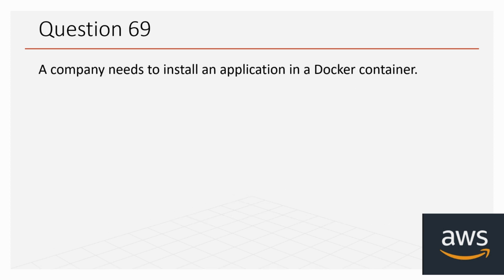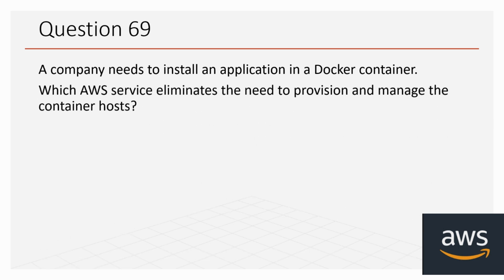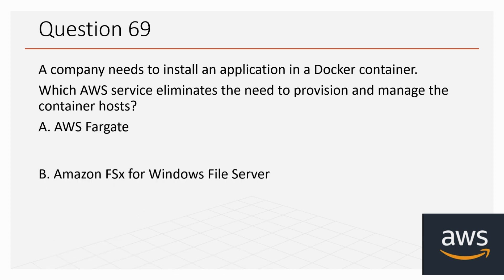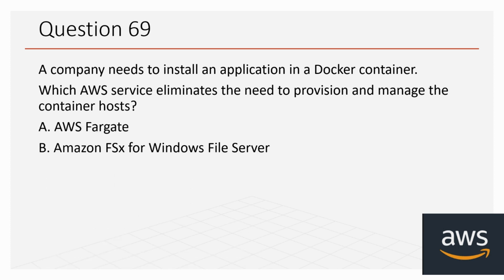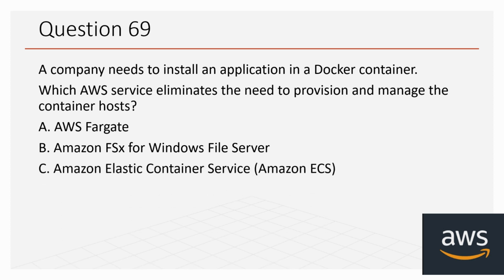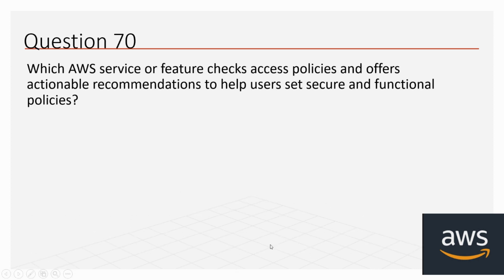Question 69: A company needs to install an application in a Docker container. Which AWS service eliminates the need to provision and manage the container host? Options: A: AWS Fargate, B: Amazon FSx for Windows File Server, C: Amazon Elastic Container Service, D: Amazon EC2. The correct option is A, AWS Fargate.